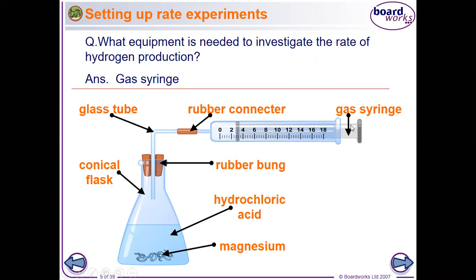The apparatus includes: a gas syringe, a rubber connector, a glass tube, a conical flask, a rubber bung, hydrochloric acid, and magnesium.